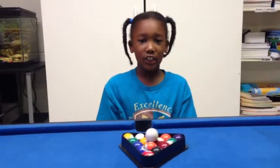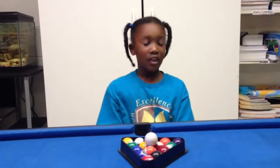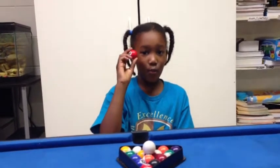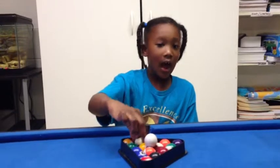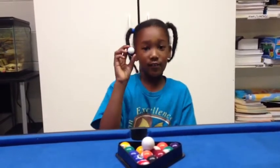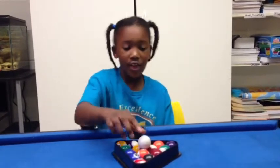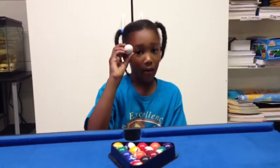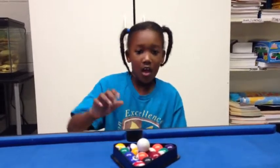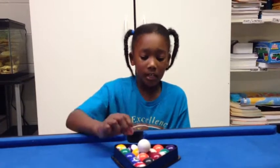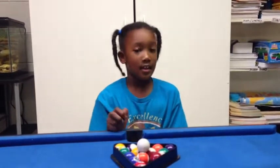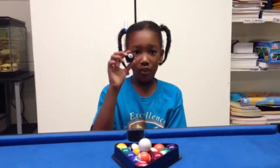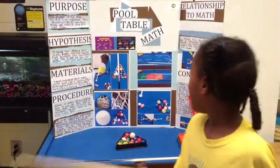Since I taught you the math and geometry, now I'm going to talk to you about the game. Low balls are solid colored balls — they range from 1 to 7. High balls are striped and range from 9 to 15. The white ball is the cue ball. It is the ball that you hit to direct the other balls into the pockets. The object of the game: get all balls in the pocket, and then once you've got all of them in the pocket, you have to do the 8 ball last. This is my math fair project, pool table math.